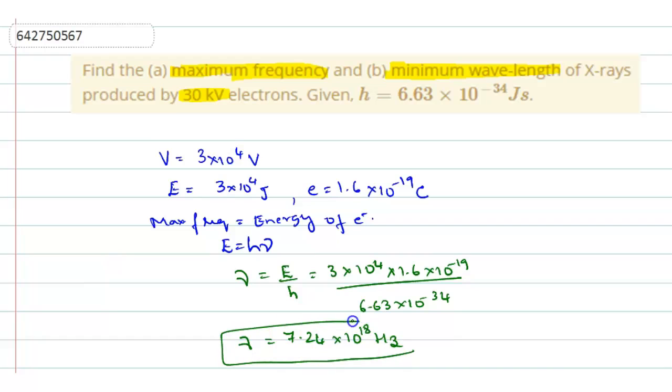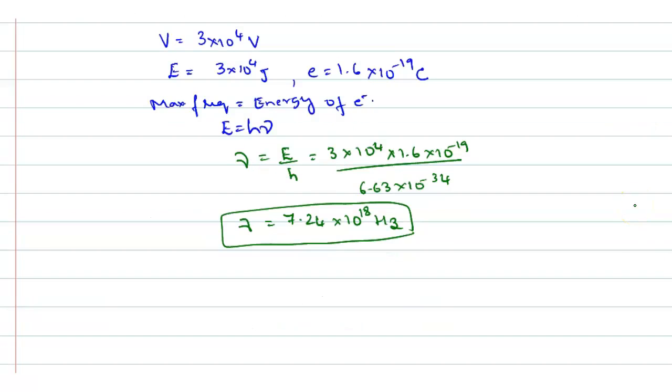So this is the maximum frequency produced by the electrons. Same way we have to do it for minimum wavelength also. So now to do for minimum wavelength, since we already know the frequency, now you can easily calculate the wavelength. So B part, when you are doing it, minimum wavelength produced by the X-rays is denoted with lambda.